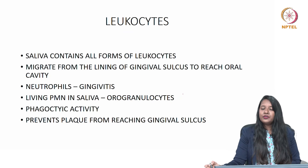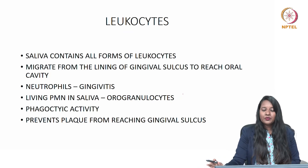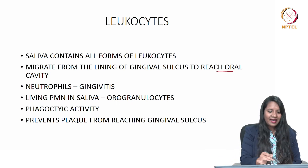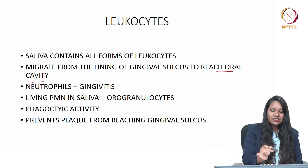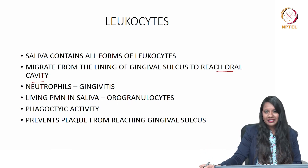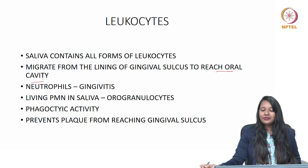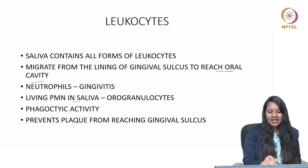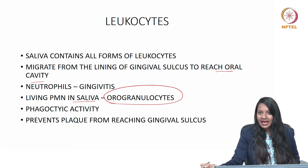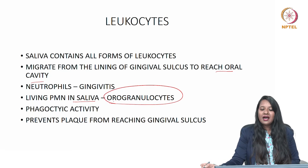Moving to leukocytes: saliva contains all forms of leukocytes which migrate from the lining of the gingival sulcus to reach the oral cavity. Neutrophils will be seen in greater numbers in gingivitis, and living polymorphonuclear neutrophils in saliva are known as orogranulocytes, which have phagocytic activity and prevent plaque from reaching the gingival sulcus.